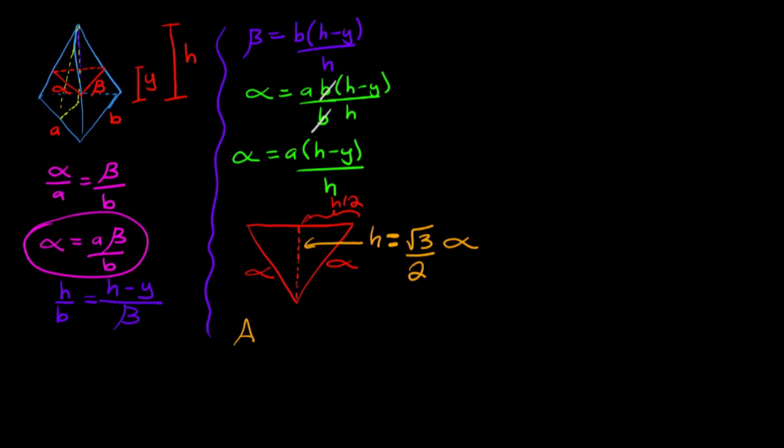So the area of the cross-section is one-half times the base, which is alpha, times the height, which is square root of 3 over 2 times alpha. This gives us an area of square root of 3 over 4 times alpha squared.